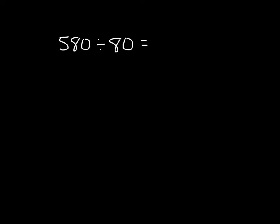Here we have 580 divided by 80. We'll use the standard algorithm without the check this time. 80 cannot go into 5, 80 cannot go into 58. However, 80 can go into 580.